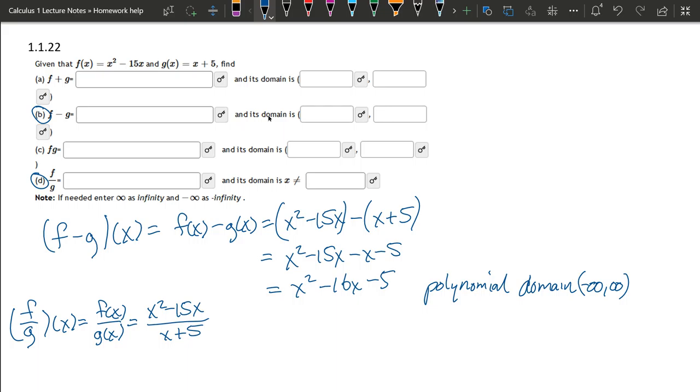Now, there's not too much reduction you can do here. I can factor an x out of the top, but that's about all I can factor. And there's no reduction, no cancellation happening here. The x minus 15 is not the same as x plus 5, so those do not cancel.